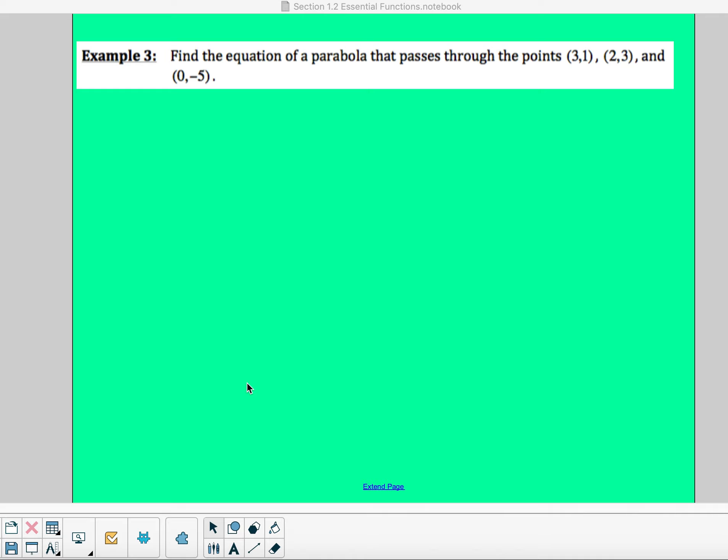In this problem, we're given three points. It does not specify that any one of those is the vertex, and it also does not specify, so since it's not the vertex, we're not going to use a vertex form, and it doesn't specify that I have any zeros or roots, so I'm not going to use factored form, which leaves us with our standard form.